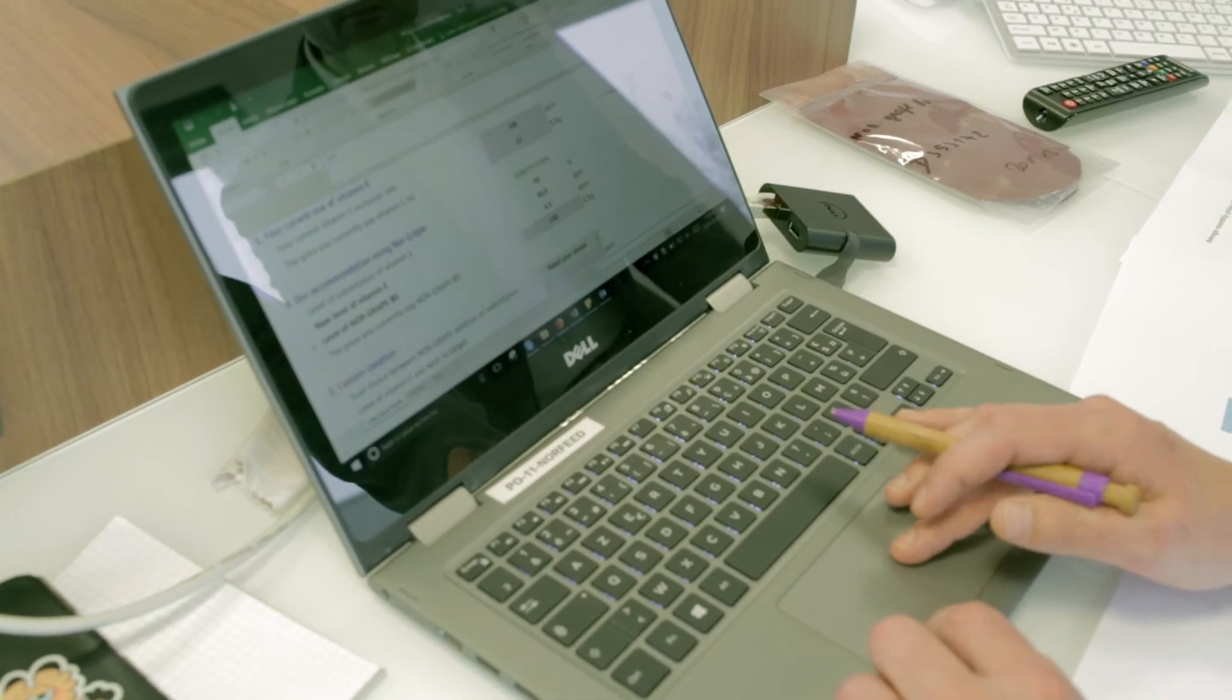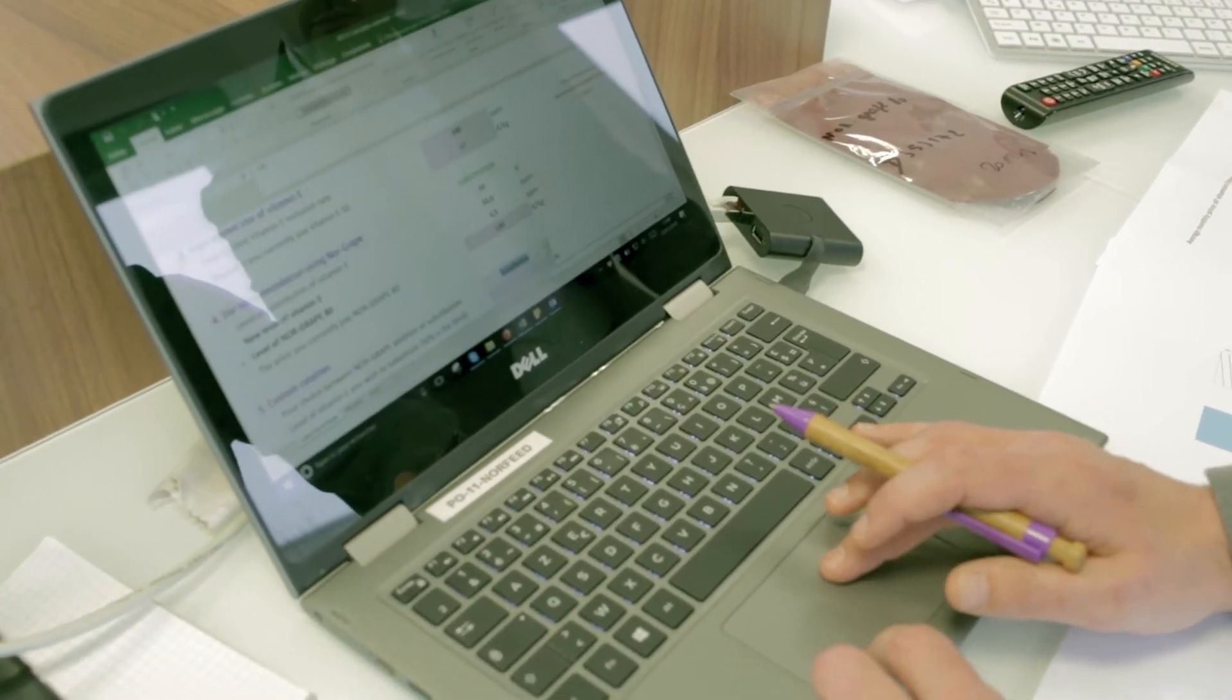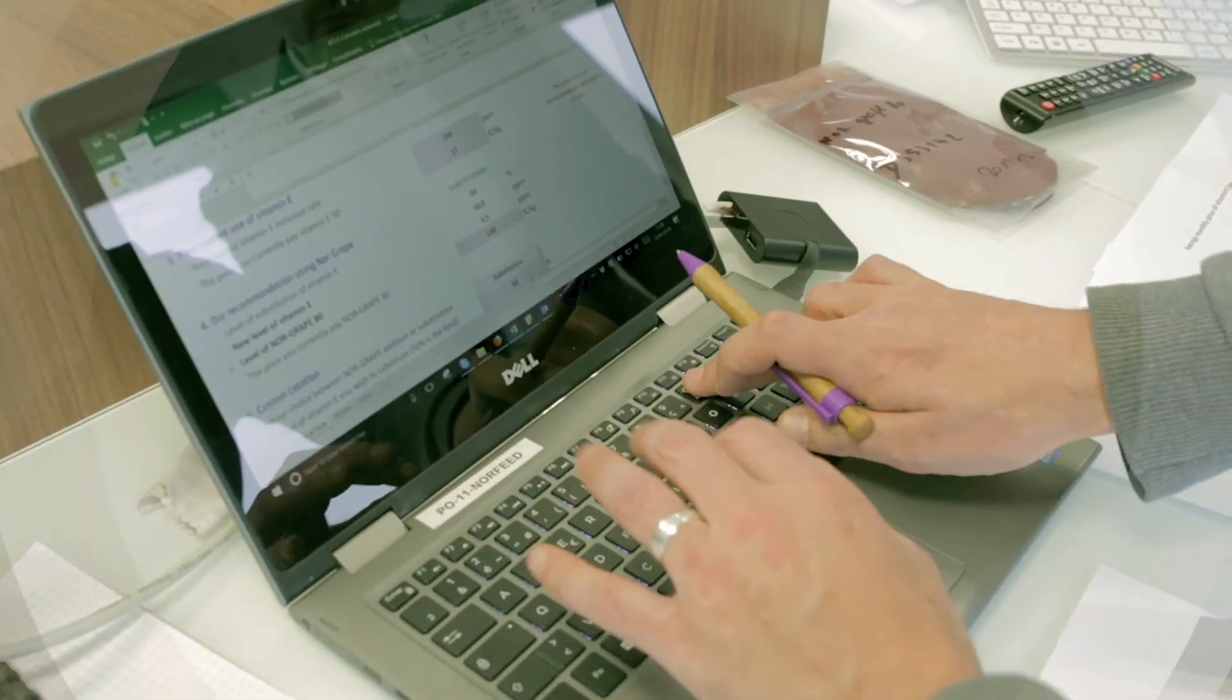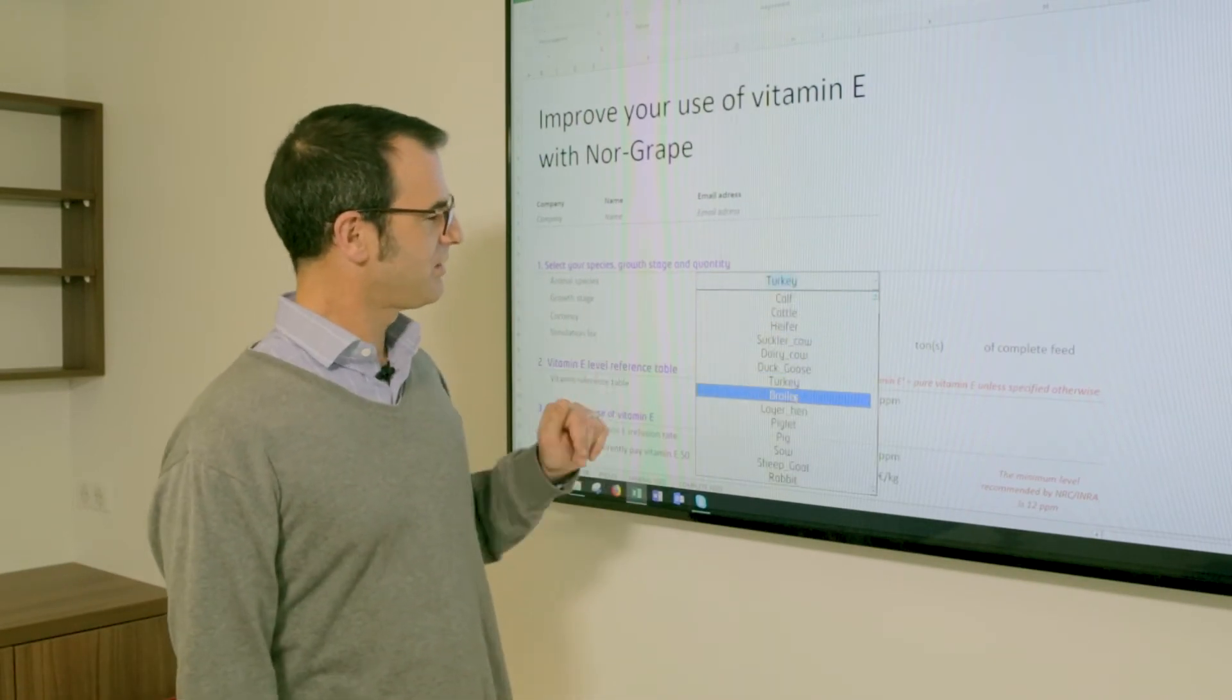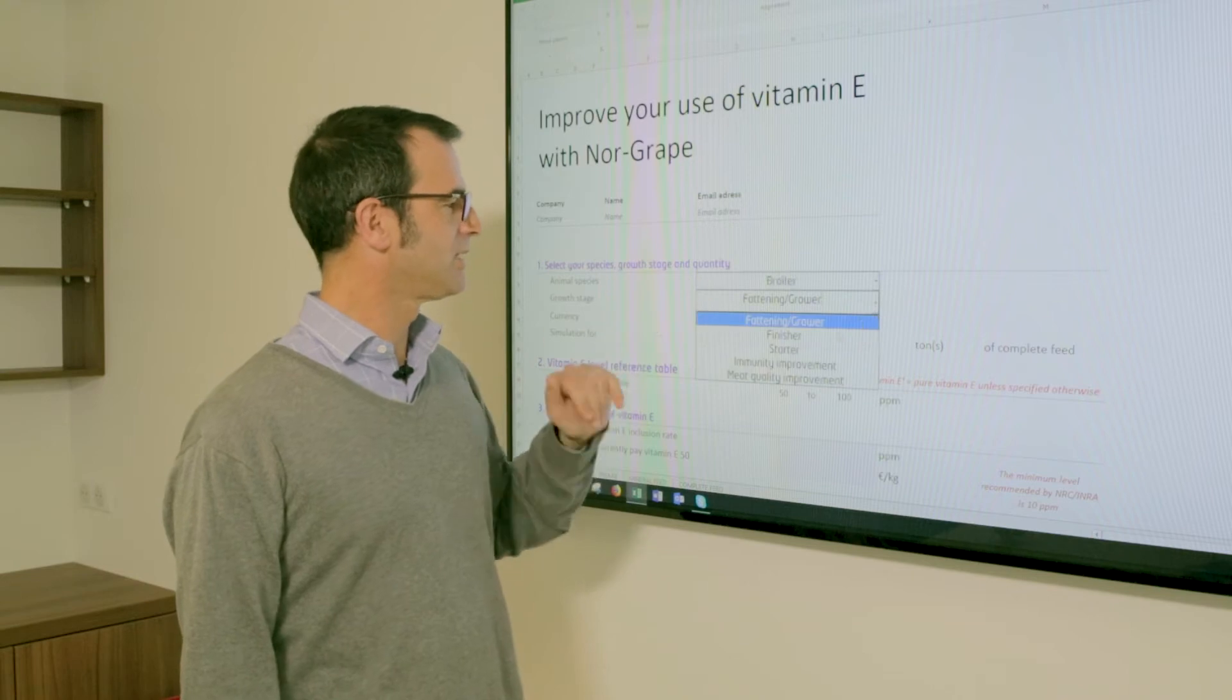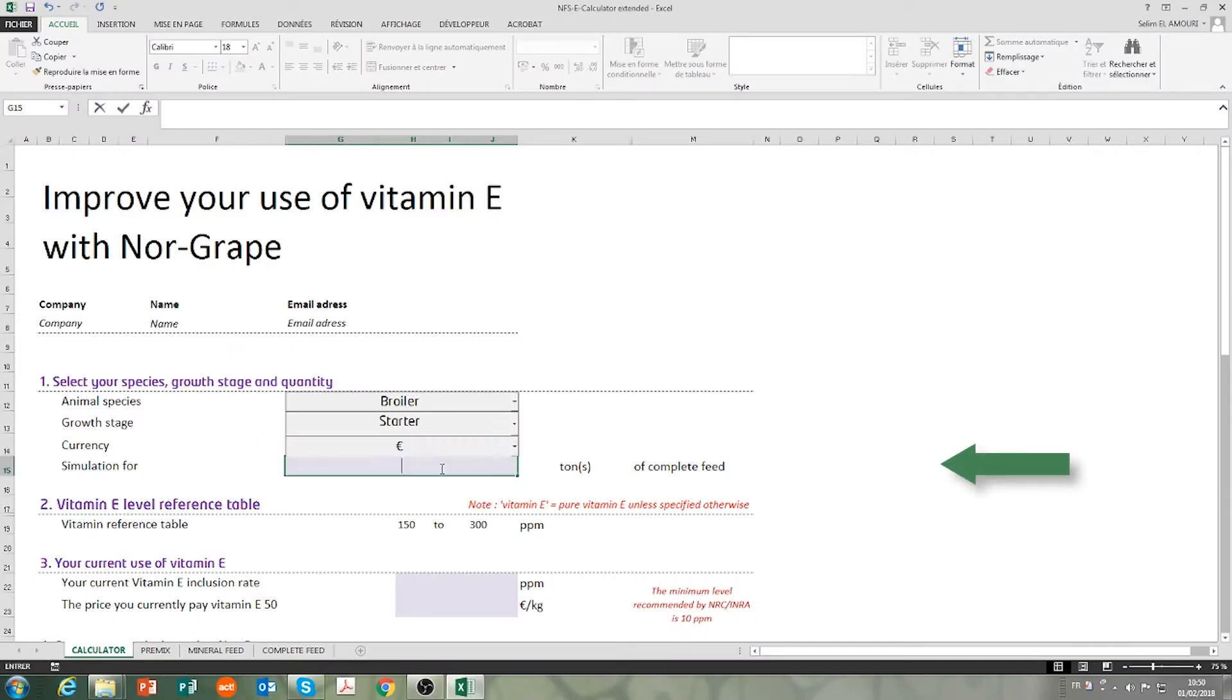Norfit develops the e-calculator, a tool that evaluates Norgrape 80 return on investment. Let's make a simulation with broilers at starter stage and for 1,000 tons of complete feed.